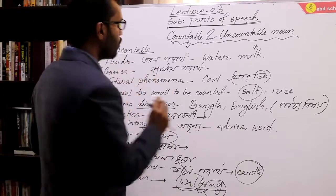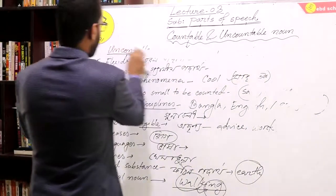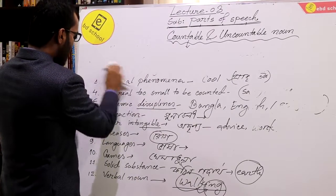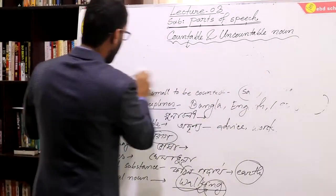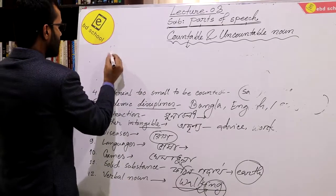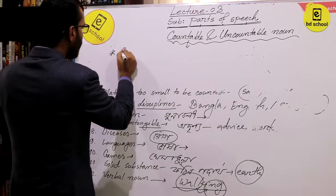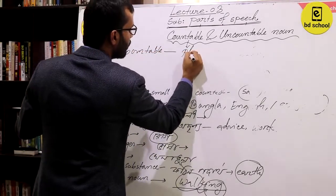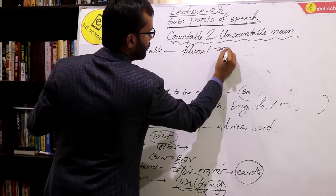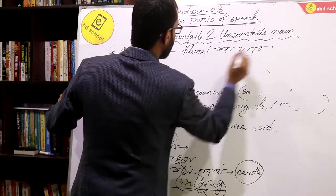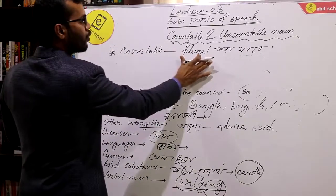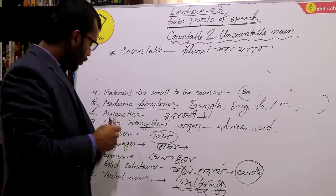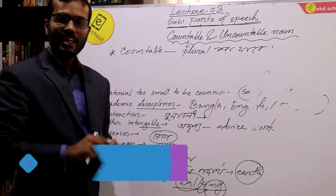Now, how can we identify the sign of an uncountable noun? The important sign of an uncountable noun is: a countable noun has a plural form, but an uncountable noun does not have a plural form. If you have an uncountable noun, it does not take a plural form.